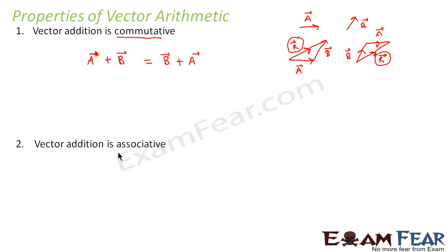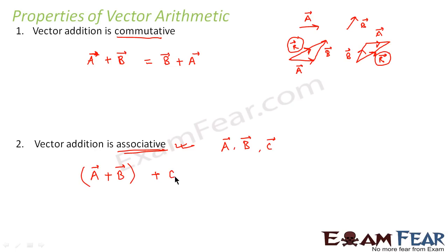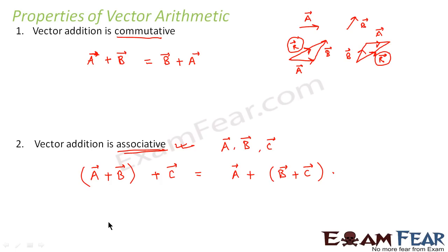The second property is vector addition is associative. If we have three vectors a, b, and c, then (a plus b) plus c is equal to a plus (b plus c). That means adding a and b first, then adding c to the result, gives the same outcome as adding a to the sum of b and c. This is similar to the associative law for numbers.